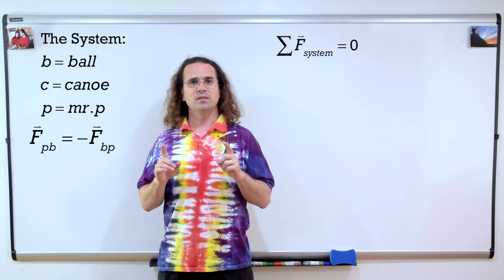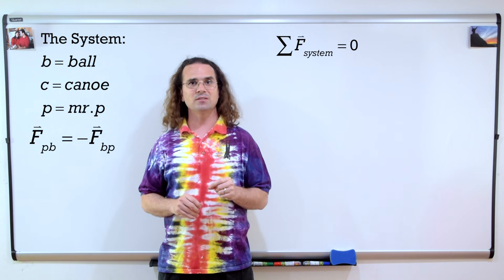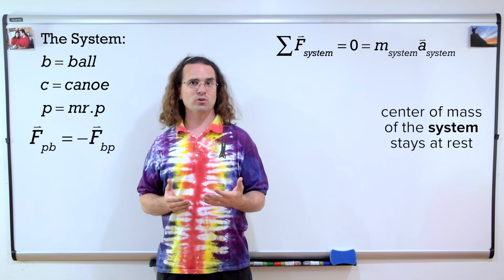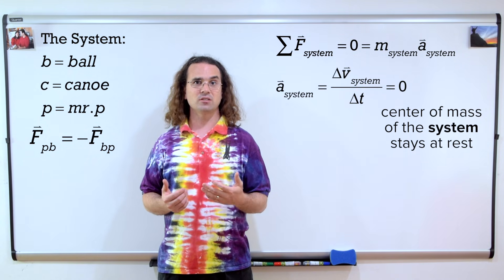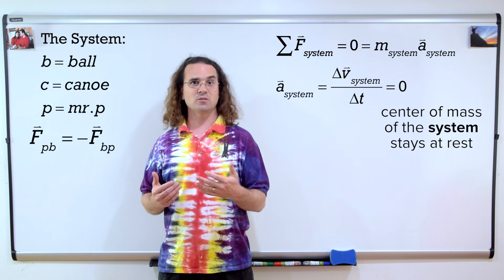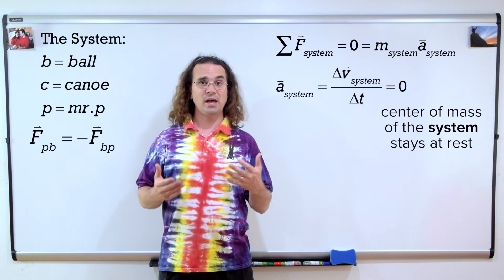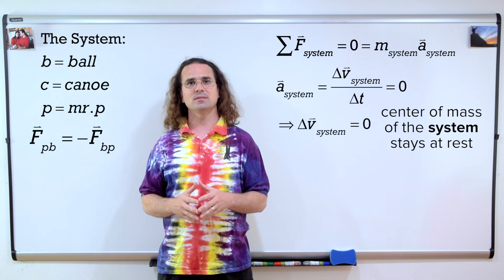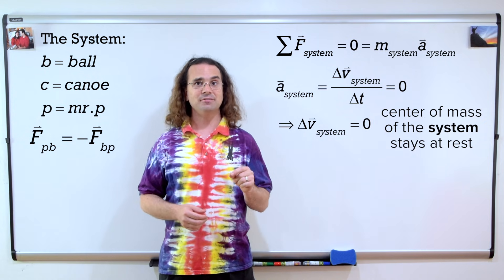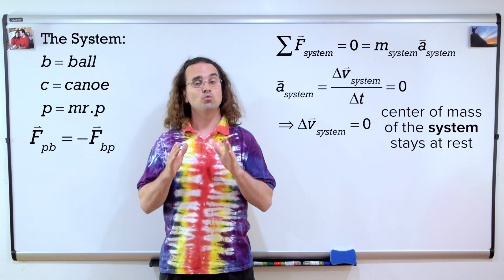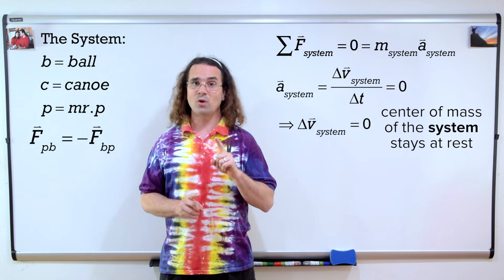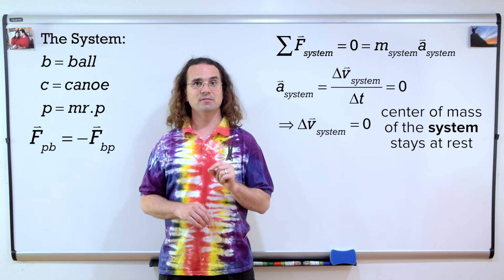But then, why does anything move? We have to be careful here. The system remaining at rest means the center of mass of the system will not move. In terms of Newton's second law, because the net force acting on the system is zero, the acceleration of the system is zero. Therefore, because the system starts out at rest, the velocity of the system will not change — it will stay zero and the center of mass of the system will remain at rest. However, as the ball moves to the left, the center of mass of the system moves to the left relative to the boat. To be clear, the center of mass moves to the left relative to the boat, but it does not move relative to the planet.